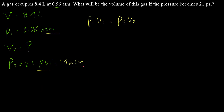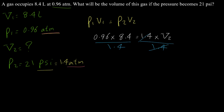So: p1·v1 = p2·v2 → 0.96 × 8.4 = 1.4 × v2. Dividing both sides by 1.4, v2 = (0.96 × 8.4) / 1.4 = 5.8 liters. The unit is liters because v1 was in liters. Thank you for watching this video; please subscribe to this channel for more videos.